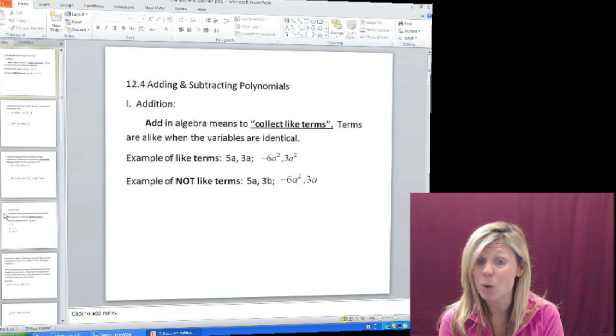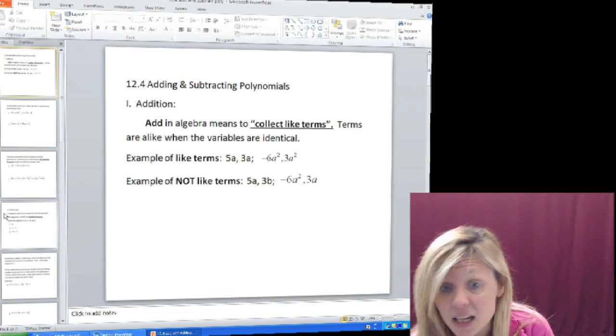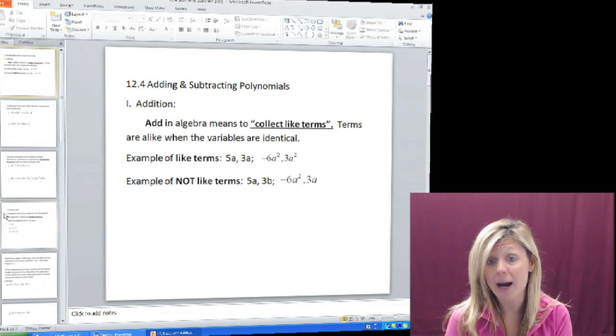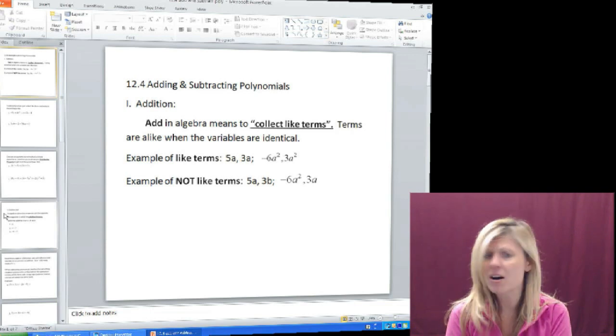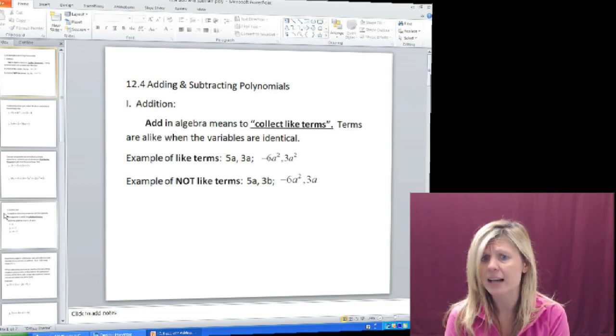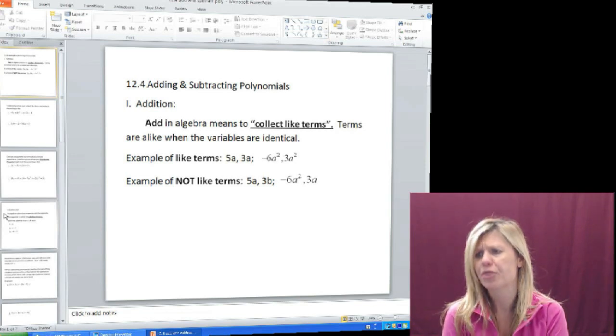Also, negative 6a squared and 3a are not alike. Even though they each have an a, one of the a's is a square, has an exponent of 2, the other a has an invisible exponent of 1, and they are then not identical. They're not alike. So we couldn't put those together. That would be in real life, like having negative 6 airplanes and 3 apples.